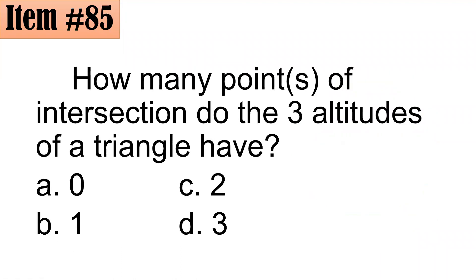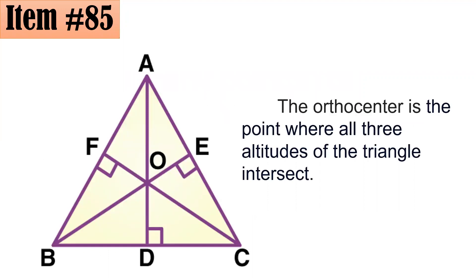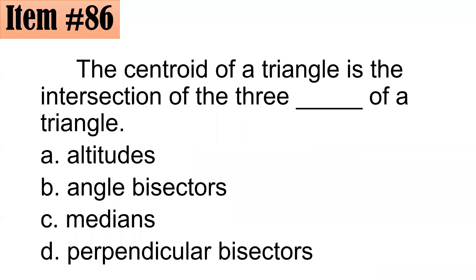Item 85: How many points of intersection do the 3 altitudes of a triangle have? If you draw the 3 altitudes, all 3 of them will intersect at exactly 1 point. That point is what we call the orthocenter. So the answer is only one point, letter B.